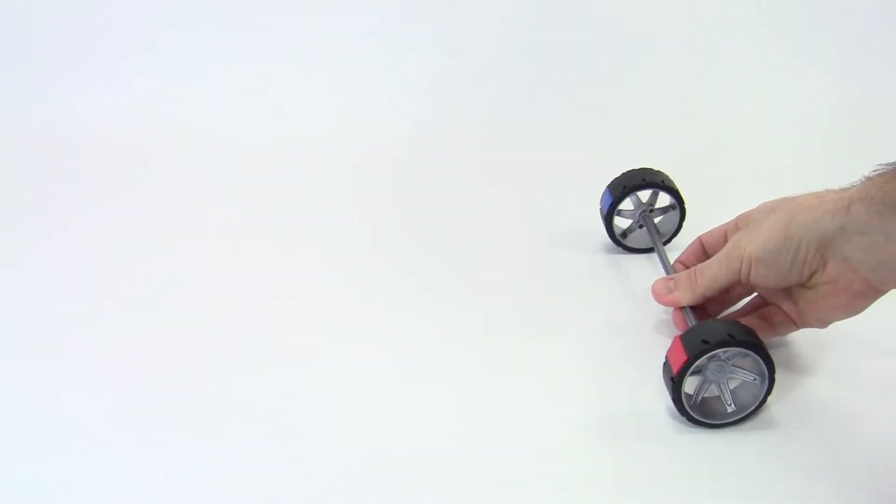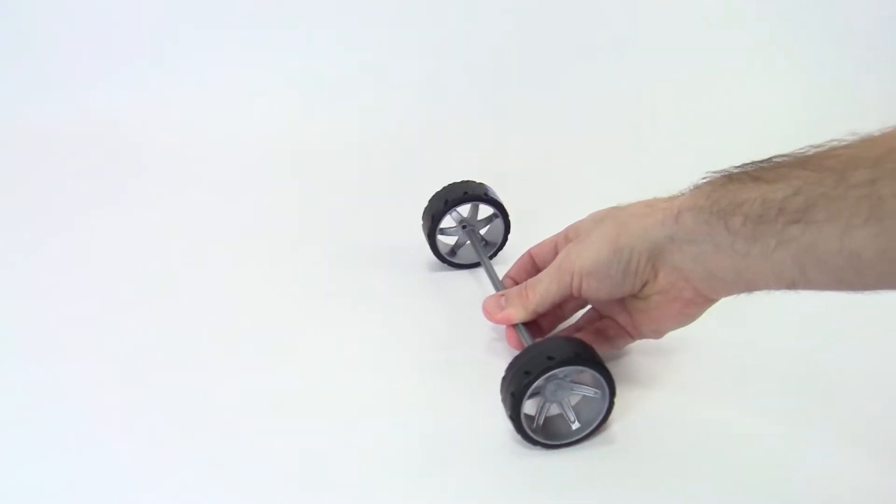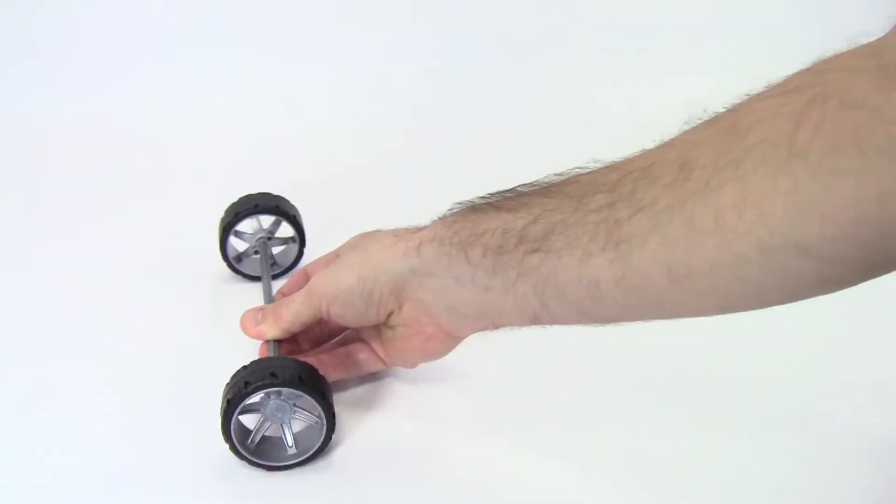This is fine, for example, if you're pulling a wagon and the axle is not powered. Both of the wheels can just rotate independently.